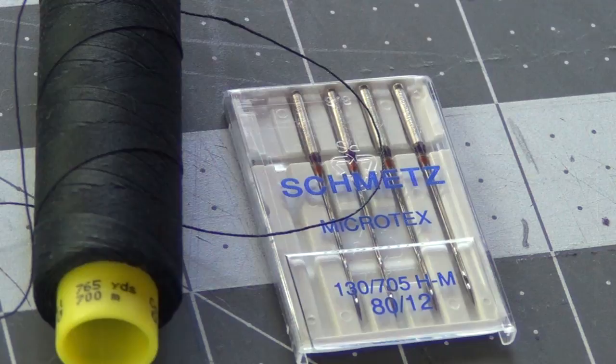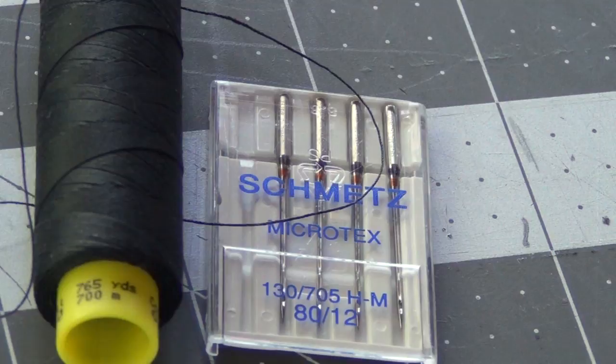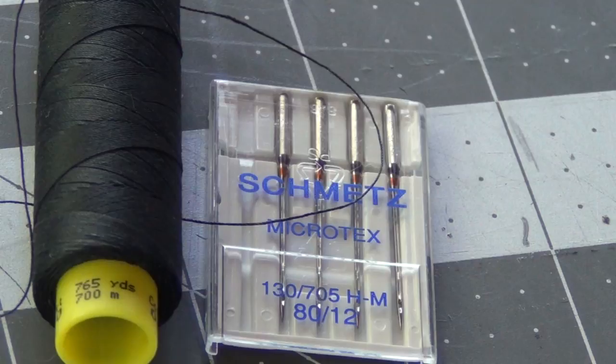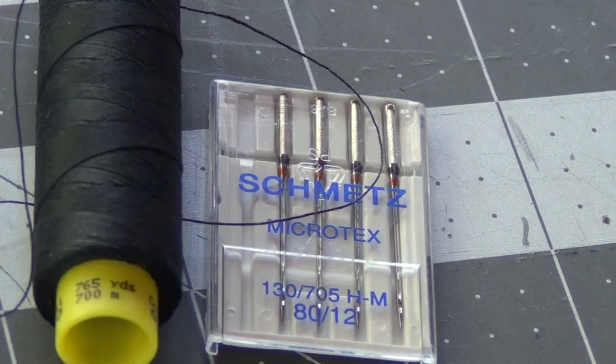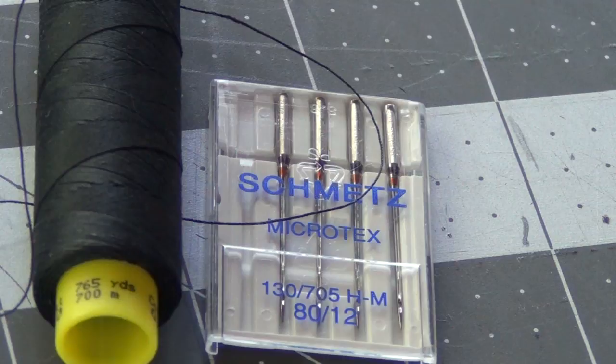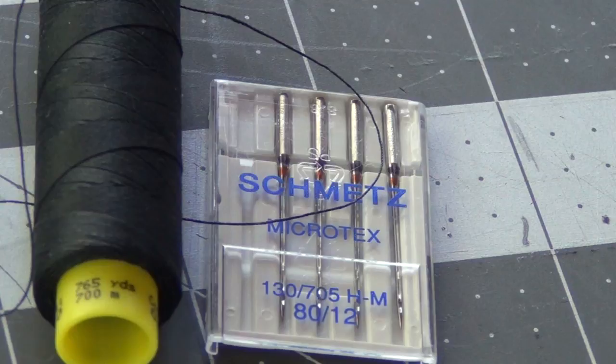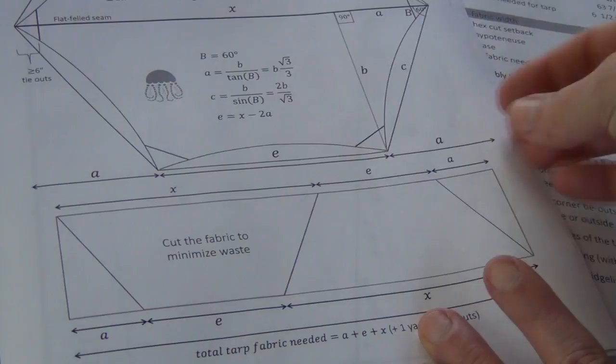Today I'm going to be using this microtex needle in size 12 because it goes with my Mara 70 thread. A universal needle would also be fine. I've even sewn through tarp material silpoly with a ballpoint needle and that was also fine, so there's a lot of different theories out there about which needle to use. Just maybe practice sewing a few stitches and see what needle works best for you.